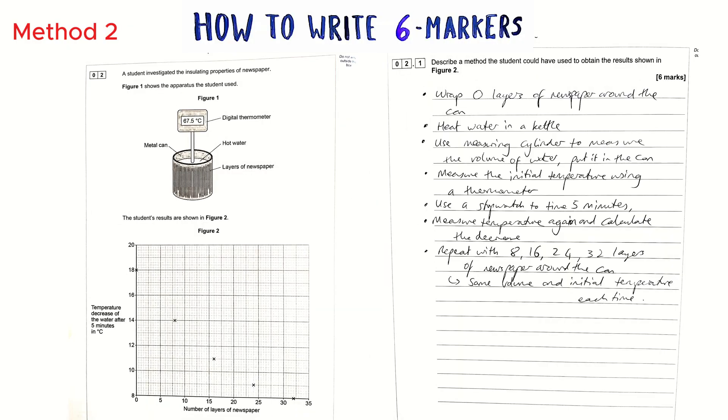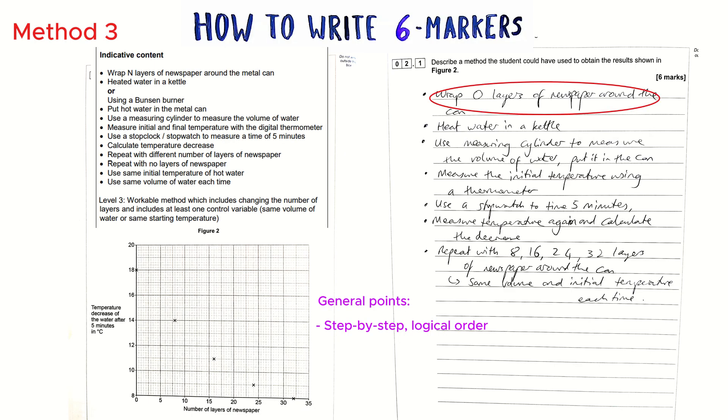So for this one I'm probably going to give it around a three, either a two or three. They have mentioned using different newspapers which is mentioned in the graph but they haven't been specific enough with their equipment and what they're measuring and when. The last method I've got to show you, even though it's not one two three four five six steps, is done in bullet points. We can see there are numbers in this which is always a good sign. They've said we're going to wrap zero layers of newspaper around the can. The last point talks about repeating with 8, 16, 24, 32 layers.